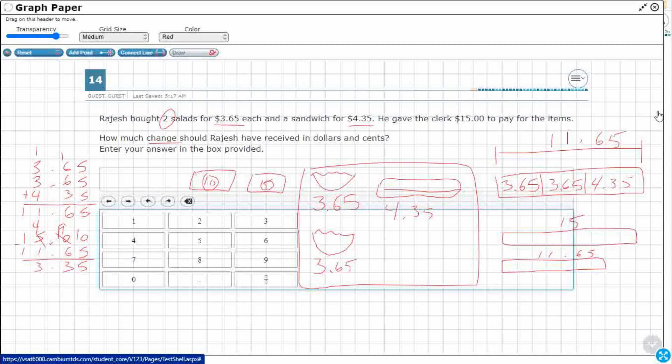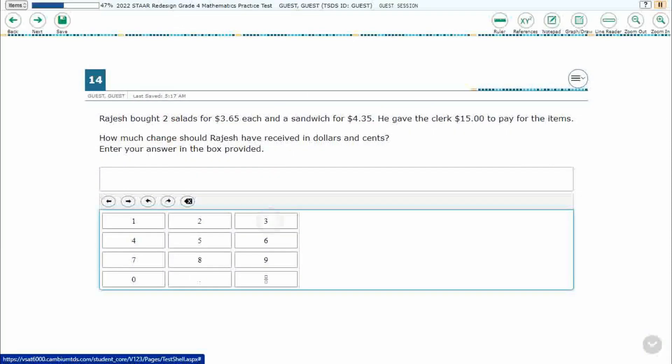Alright, so I need to keep that in my brain as I come back here. Let's go ahead and just type 3.35. Like I said, there's no enter button, and we don't need to worry about the dollar sign. That is our answer.